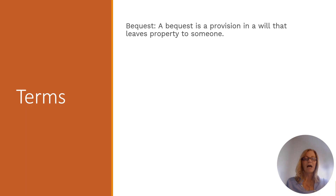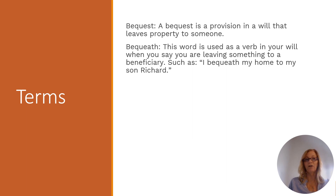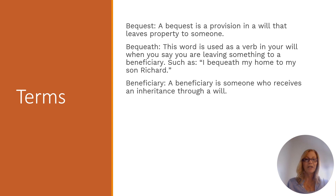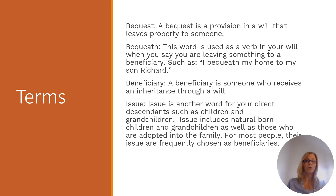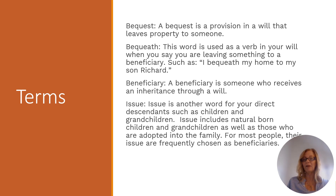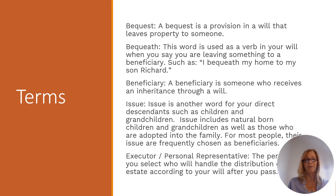Let's talk about the terms we'll frequently see. A bequest is basically what you're doing when you leave property to someone — and the verb is bequeath, as in 'I bequeath my home to my son.' The beneficiary is the person who is going to receive, so it's the person to whom you are bequeathing. An issue is just another word for your direct descendants, such as children and grandchildren, and this generally includes natural born children and grandchildren. Most people will choose their issue to be their beneficiaries.